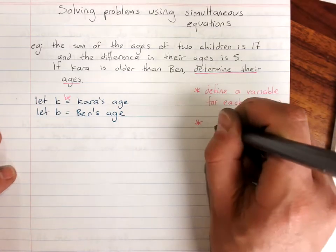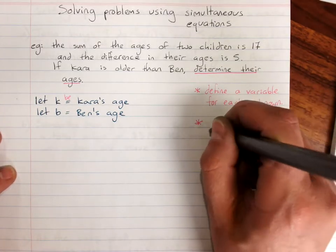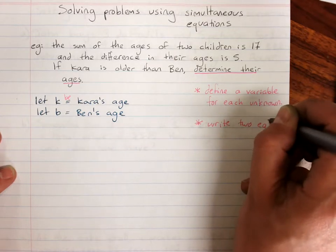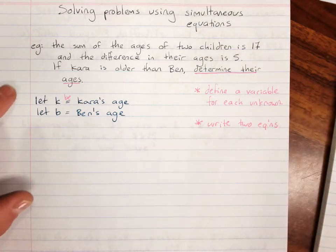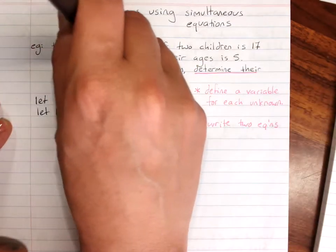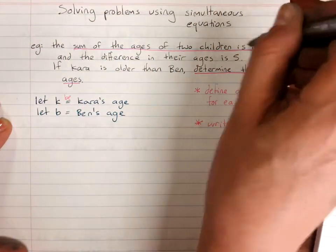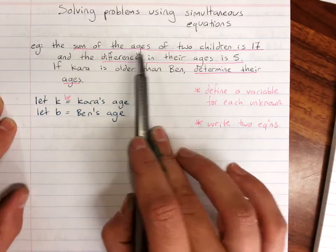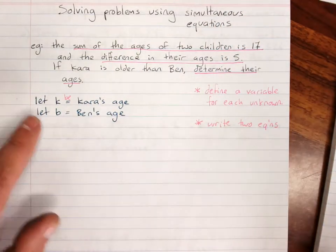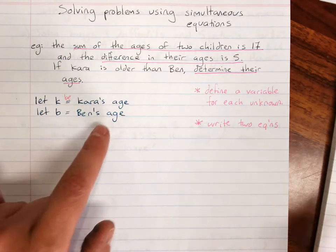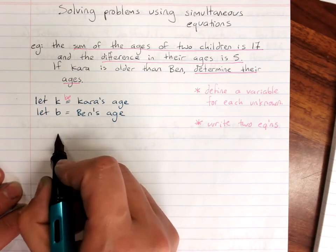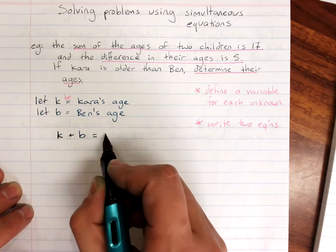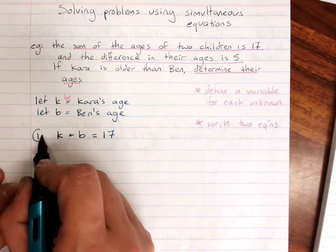Then you need to write two equations from the information that was given. It is a good idea to underline the information. The sum of the ages of two children is 17. So since K is Kara's age and B is Ben's age, that means Kara's age plus Ben's age equals 17. This is equation 1.